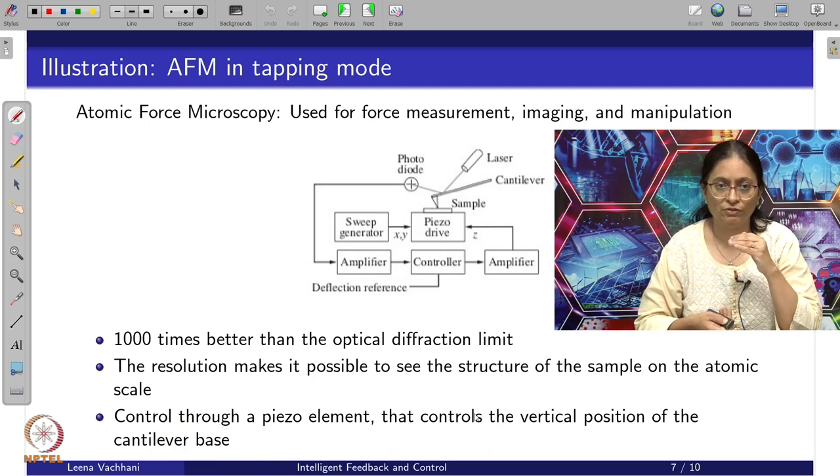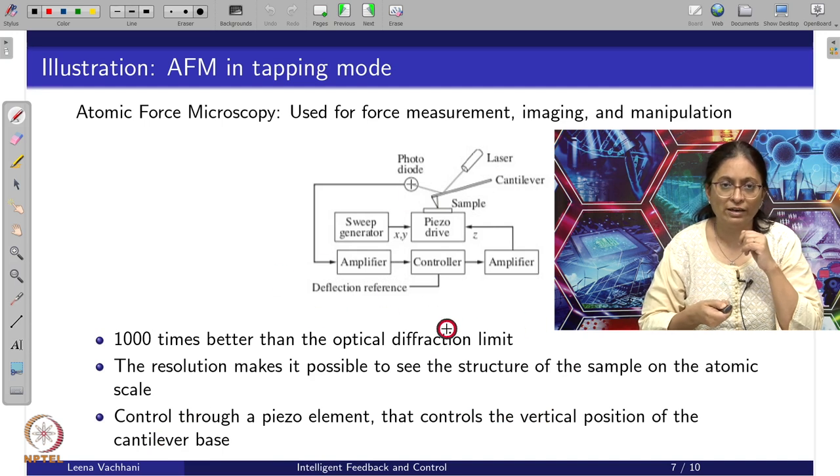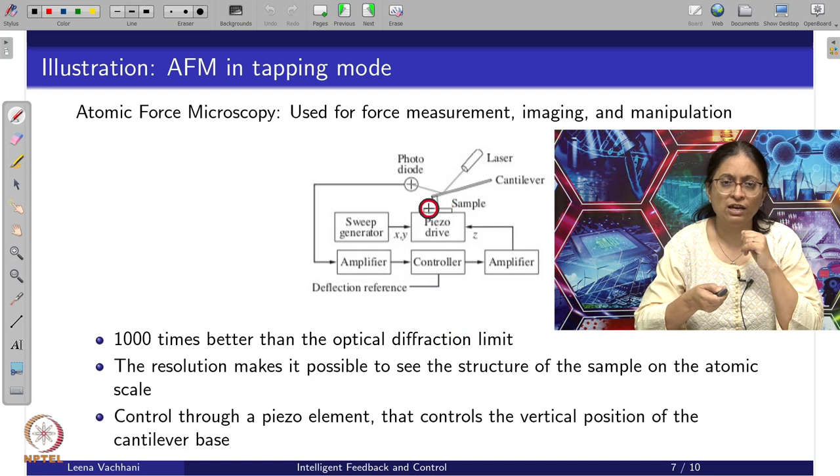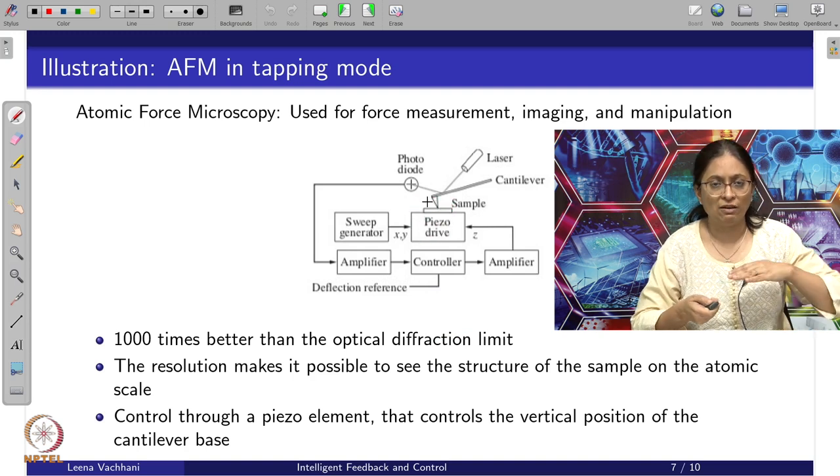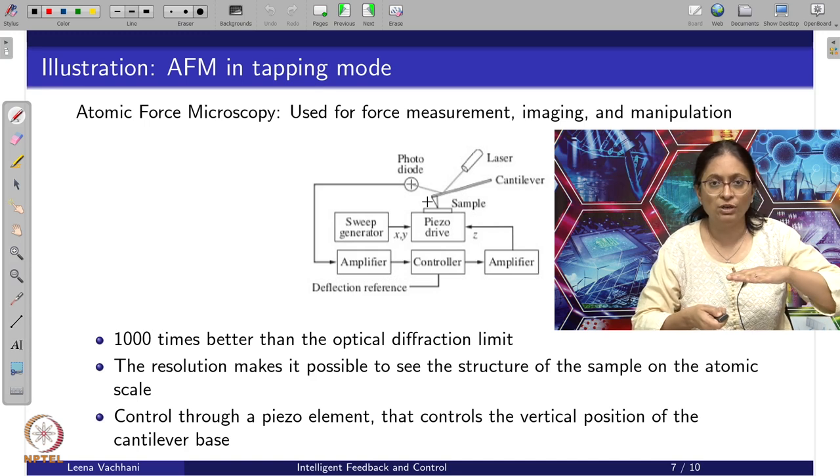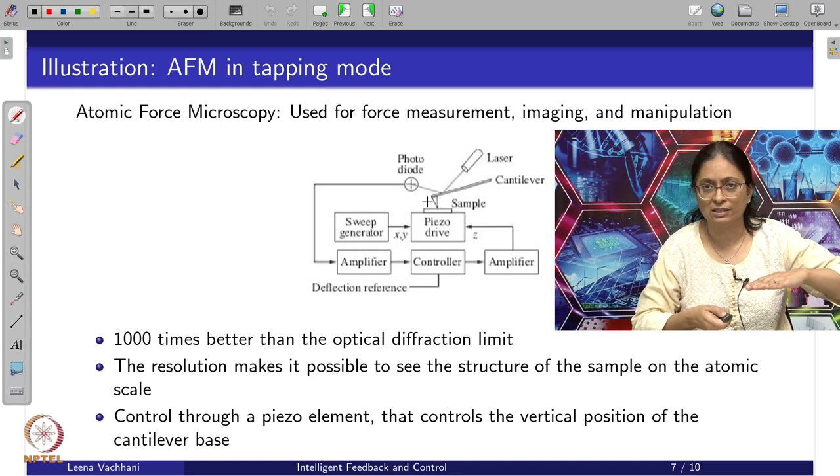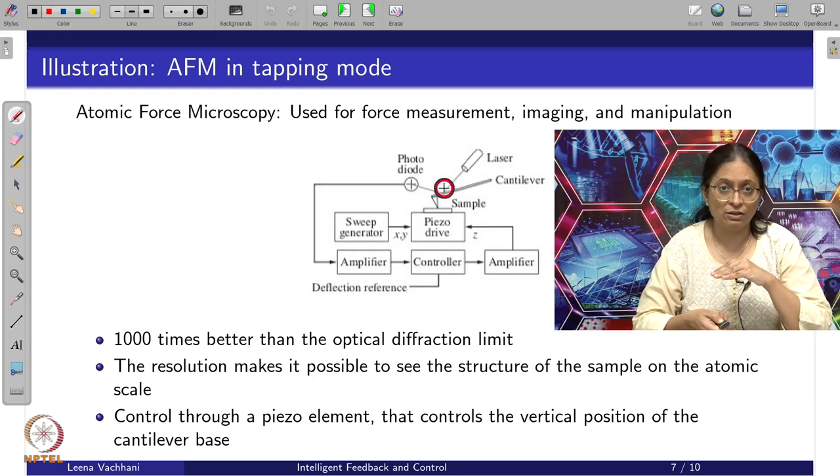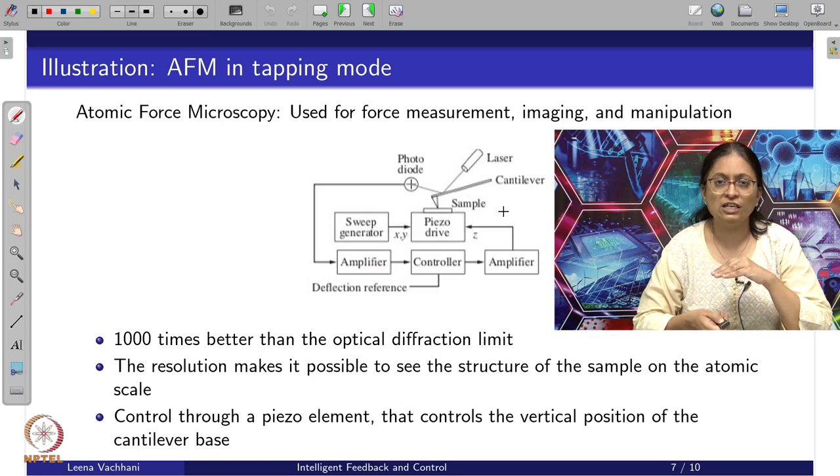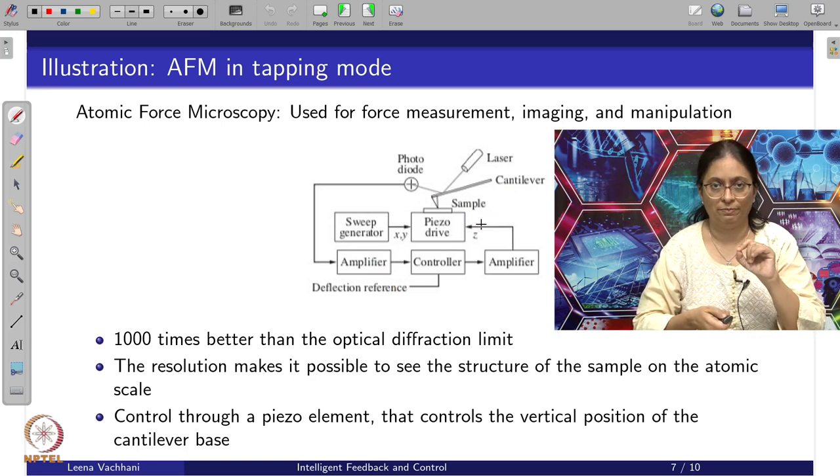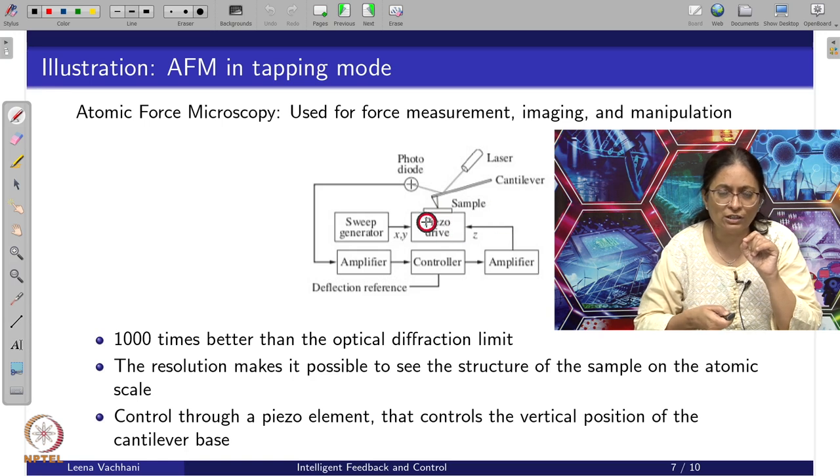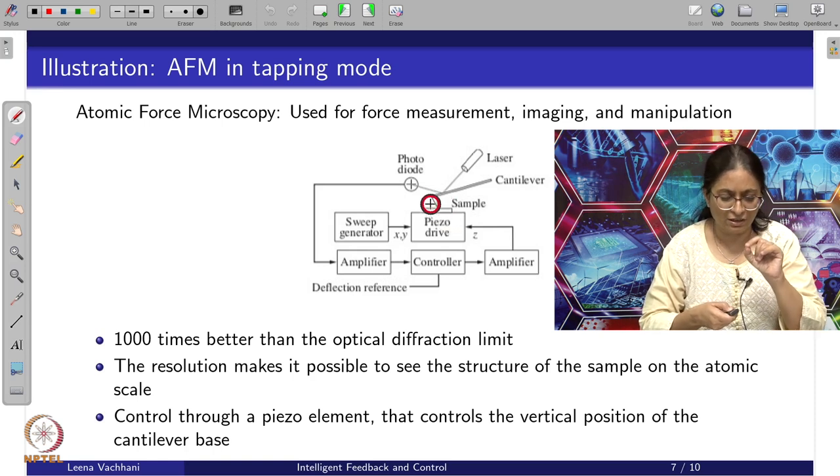This uses control through a piezo element that controls the vertical position of the cantilever beam. Let's understand this through this diagram. Your sample is placed on the piezo drive. This piezo drive is driven by a sweep generator which is moving this sample in x and y directions. At the same time, there is a controller which is changing the z position of the piezo drive depending upon what the sample depth is at an atomic level. How is that measured? There is a cantilever sitting here, which has a tip at the sample. If there is a deviation in the depth, then this cantilever shifts and the photodiode or laser and photodiode captures that deviation.